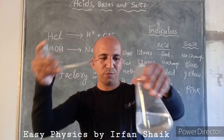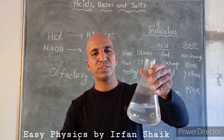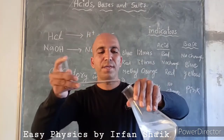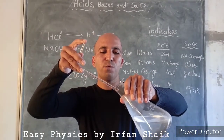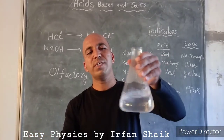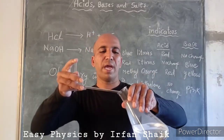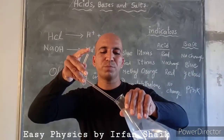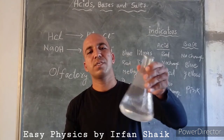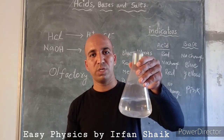Observe carefully — I am releasing only drops of acid. After releasing some drops of acid, we have to shake the flask thoroughly. Then again add a few drops of acid, shake the flask again. By adding drops of acid and shaking the flask thoroughly, this is how we dilute an acid.